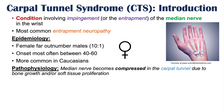The pathophysiology of carpal tunnel syndrome involves the median nerve becoming compressed in the carpal tunnel — the area in the wrist where the median nerve runs through, which is why it's called carpal tunnel syndrome. The compression occurs because of bony growth in that area or soft tissue proliferation.